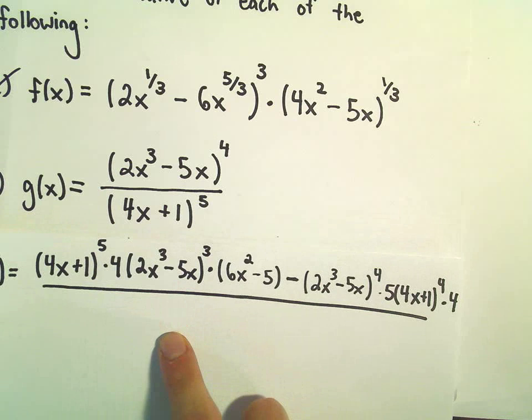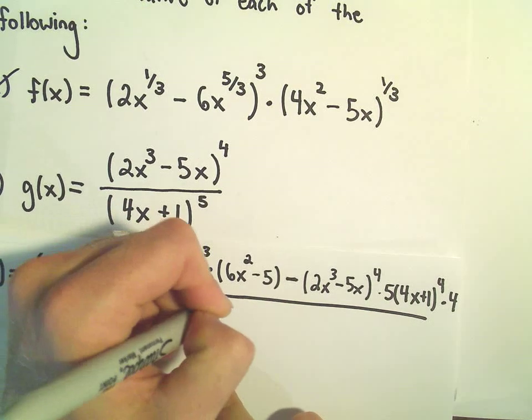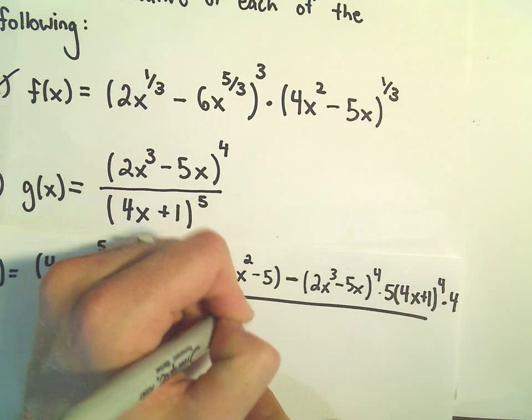And that's going to be all over the denominator, so 4x plus 1 to the 5th, all of that is now going to be squared.